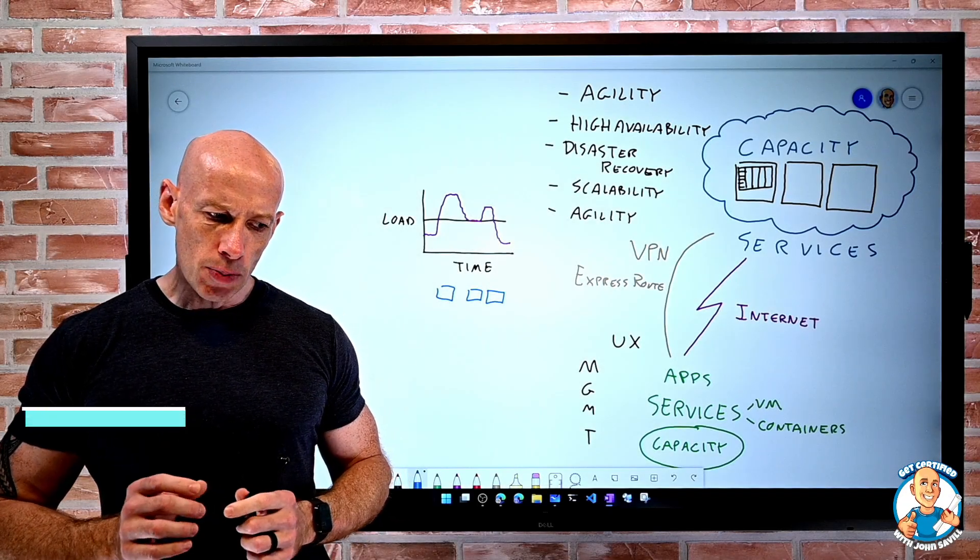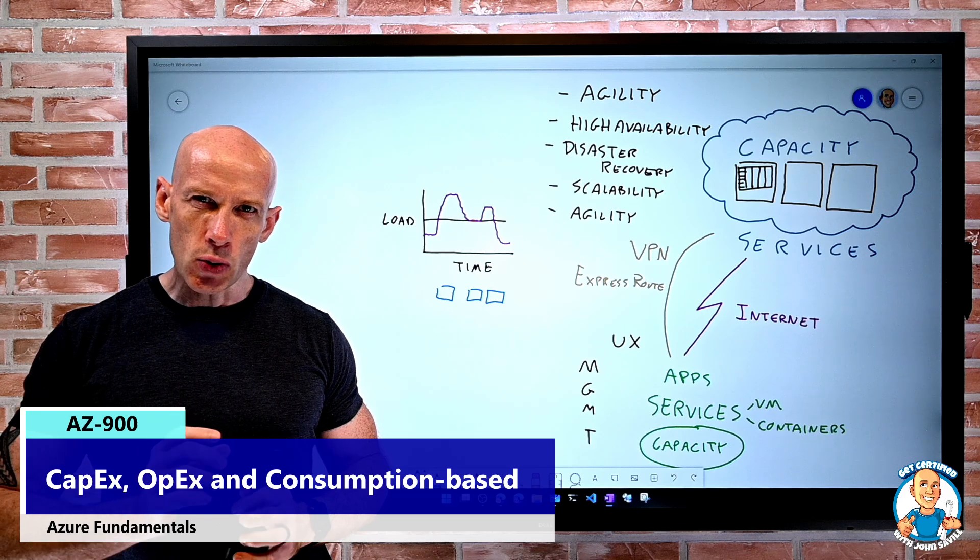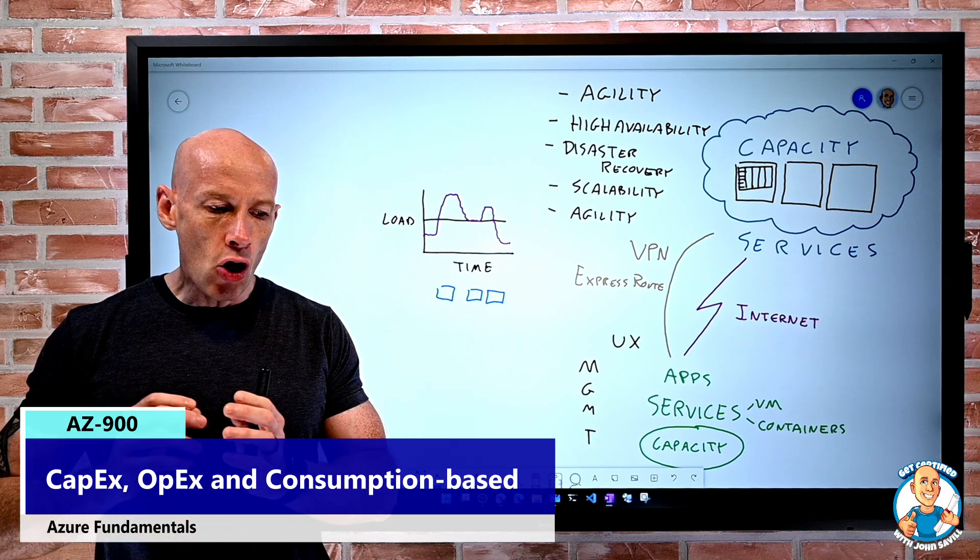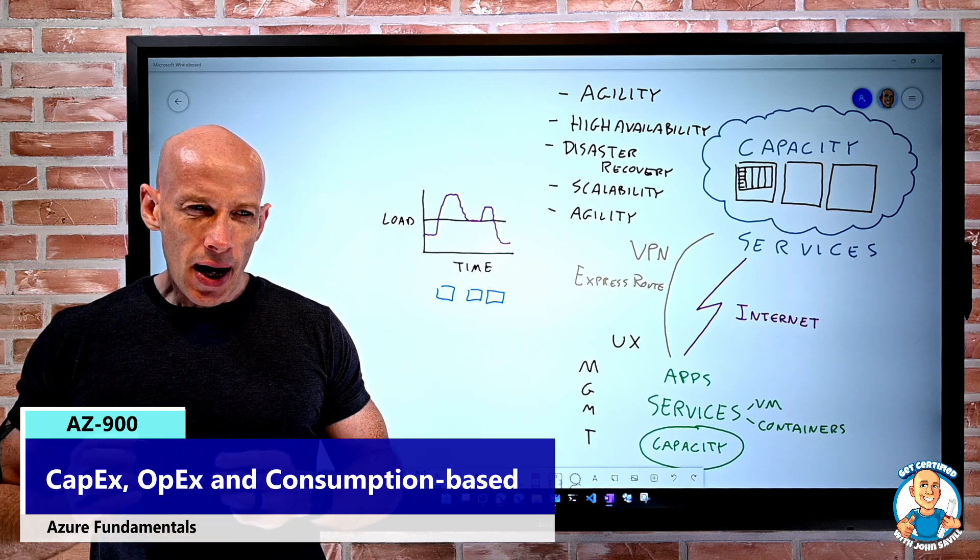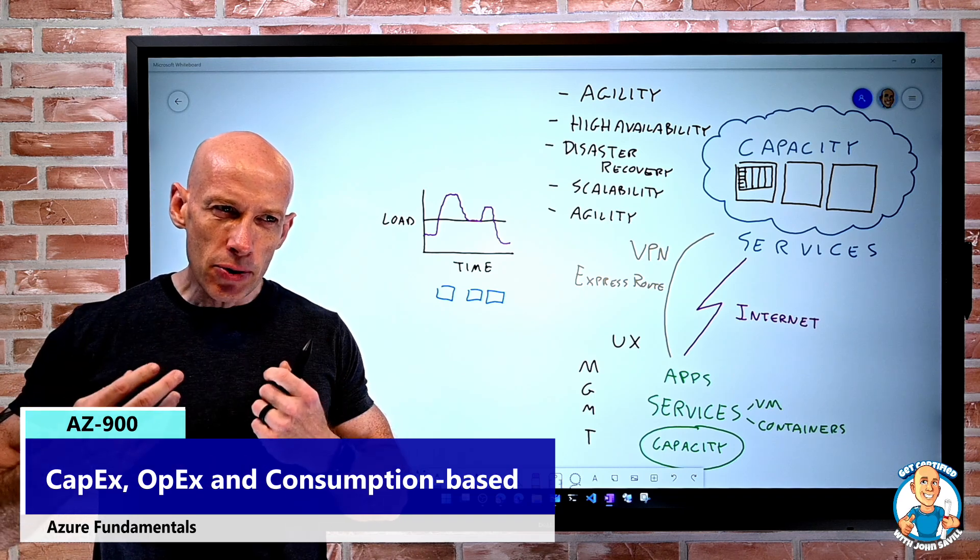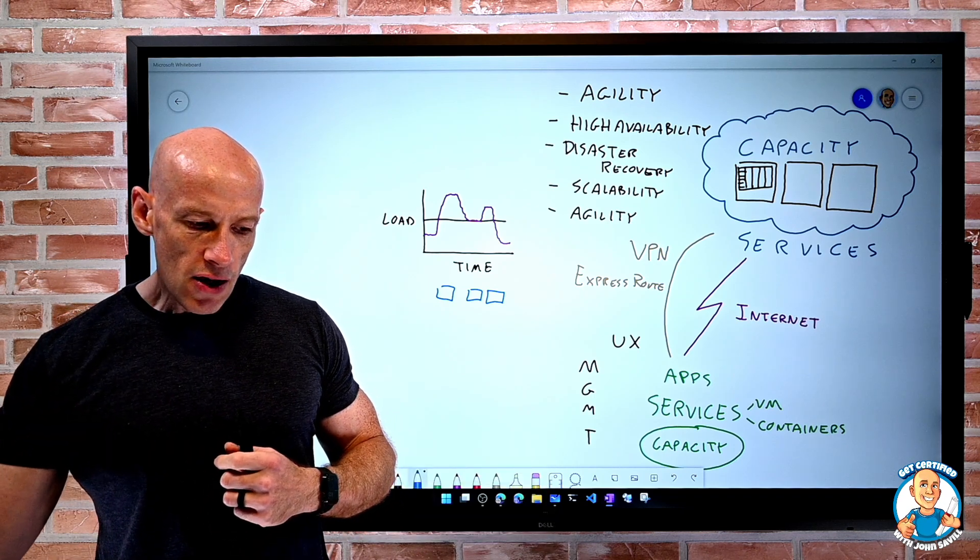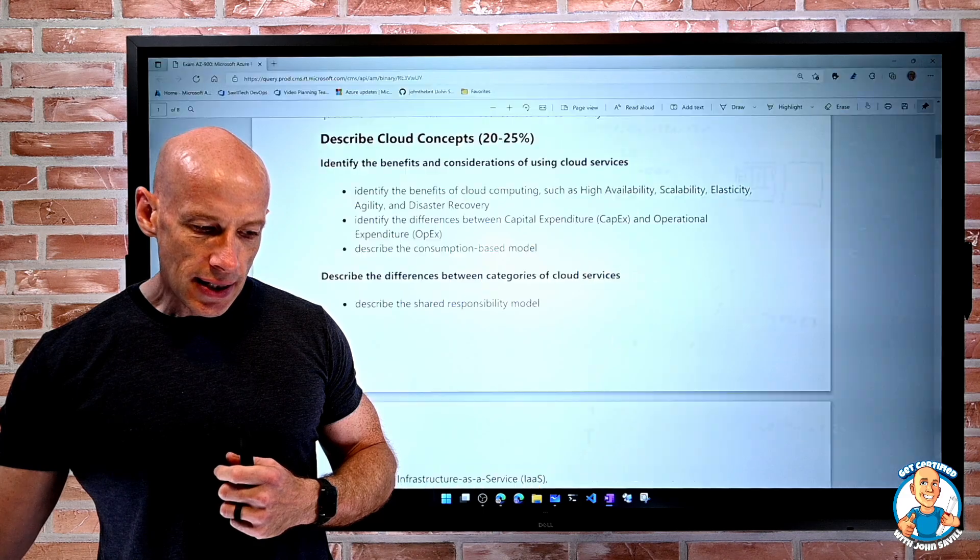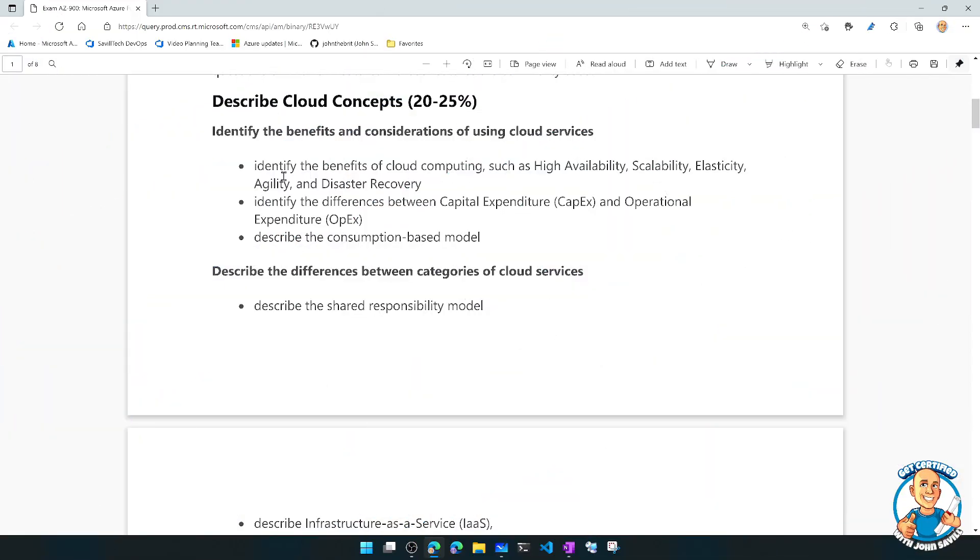In this lesson, we're going to explore identifying the differences between capital expenditure and operational expenditure and understanding the consumption-based model. If we look at the breakdown of those skills assessed, what we're looking at here are these second two in this video. That's what we're actually going to cover.